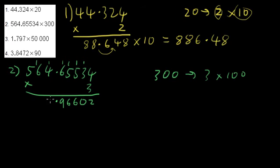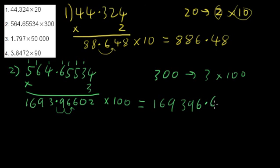Put in our decimal place. 3 times 4 is 12 plus 1 is 13. 3 times 6 is 18 plus 1 is 19. And 3 times 5 is 15 plus 1 is 16. And then we want to take that and we want to multiply it by 100. So to do this, we just simply move that decimal place two places to the right and that gives me 169,396.602, that's a zero.